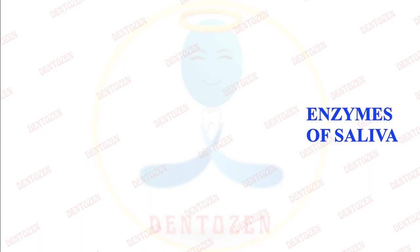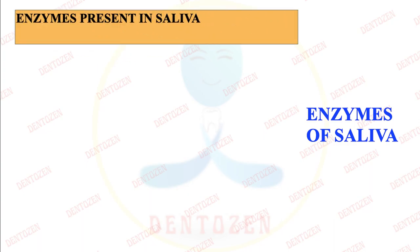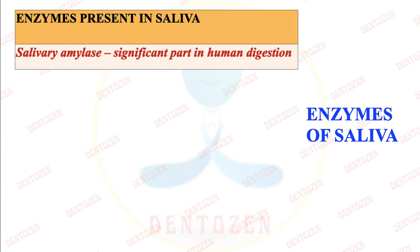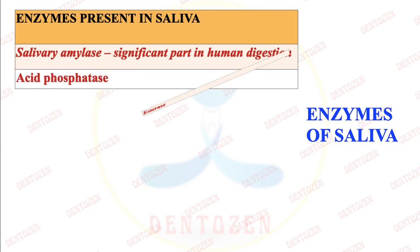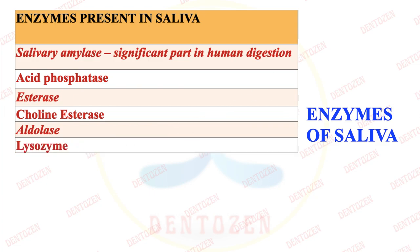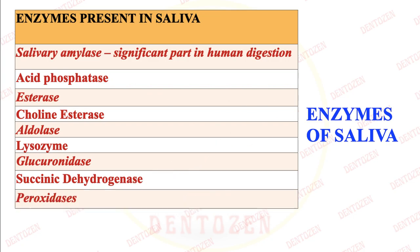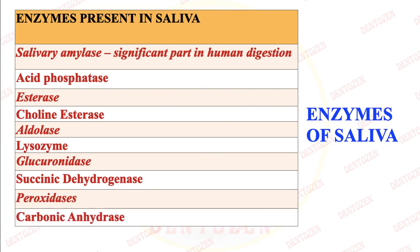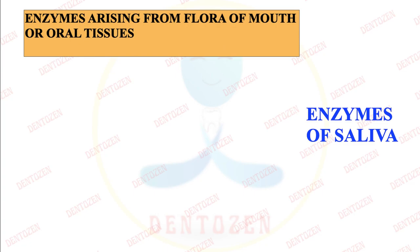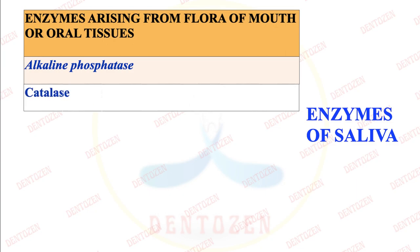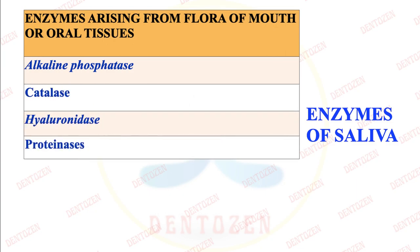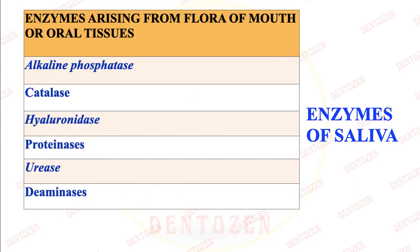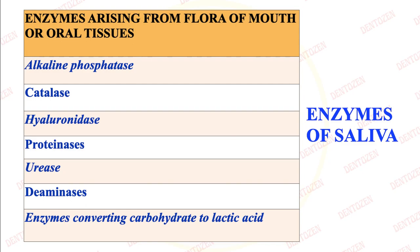Let's see the list of enzymes present in saliva: salivary amylase, acid phosphatase, esterase, cholinesterase, aldolase, lysozyme (which breaks bacteria), glucuronidase, succinic dehydrogenase, peroxidase, carbonic anhydrase, and kallikrein. Some enzymes come from the floor of the mouth or oral tissues: alkaline phosphatase, catalase, hyaluronidase, proteinases, urease, deaminases, and enzymes which convert carbohydrate to lactic acid.